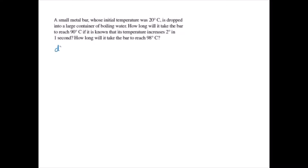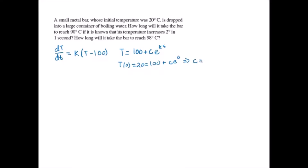We can write our differential equation as dT/dt is equal to K times (T minus 100), since 100 is the temperature of boiling water, which gives us T is equal to 100 plus C times E to the KT. And if we know T(0) is equal to 20, which is equal to 100 plus C times E to the 0, that gives us C is equal to negative 80.